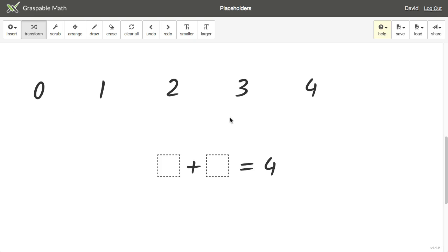Let's look at our options here and drag some into our placeholders to see if we can find an answer. I can try 1 and 2, but find that once I simplify this doesn't equal 4. If I choose 3 instead of 2, I get a valid solution.